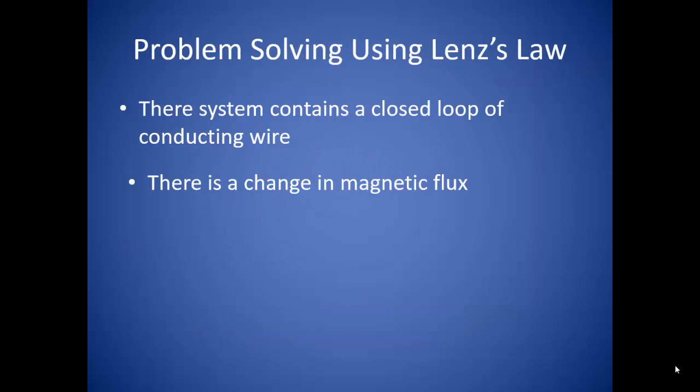In order to apply Lenz's Law to a situation, there are two conditions that must be met. First, the system must have a closed loop of current-conducting wire. If the loop is not closed, then there is no area being exposed to the magnetic field. Second, there must be a change in magnetic flux. If there is no change in magnetic flux, then there is no induced electrical current inside the wire.